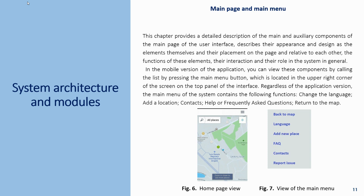System architecture and models. Main page and main menu. This chapter provides a detailed description of the main and auxiliary components of the main page of the user interface, describing their appearance, design, placement, functions, and interaction within the system. In the mobile version, components are accessed by pressing the main menu button in the upper right corner. Regardless of version, the main menu contains: change the language, add a location, context, help, frequently asked questions, and return to the map. Figures 6 and 7 show the home page and main menu views.